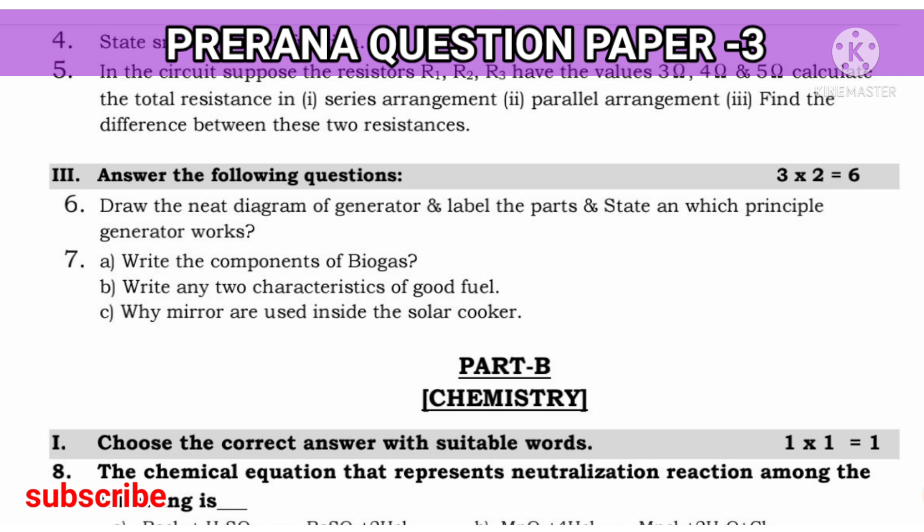Next question: write the components of biogas. The components of biogas is methane and carbon dioxide. This is also frequently asked question. Write any two characteristics of good fuel. Sources of energy in the fuels, repeated question. There are so many points. You can write any two points related to the characteristics of good fuel.